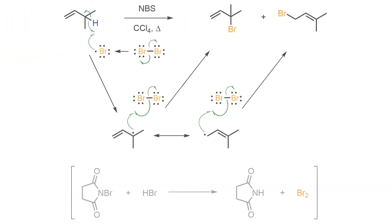It is important to note that the delocalized radical is only one species that has radical character on two separate carbon atoms. As such, the radical is then able to react with molecular bromine at either carbon to form the allyl bromide products in another propagation step. The two products are then regio-isomers.